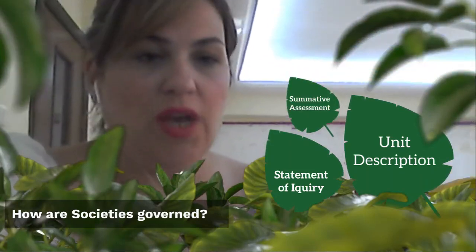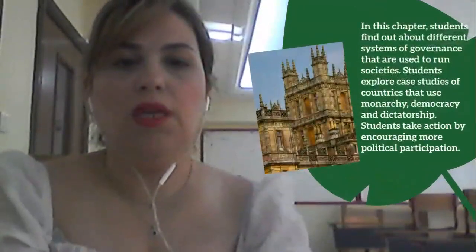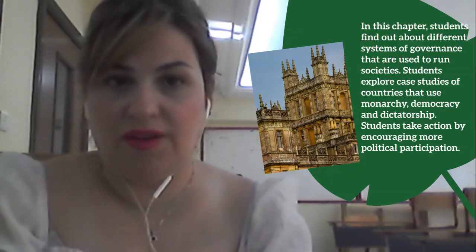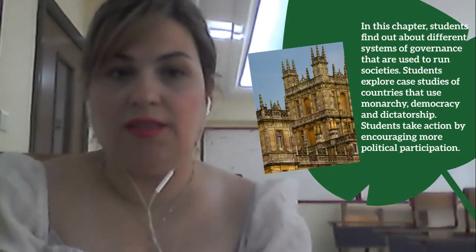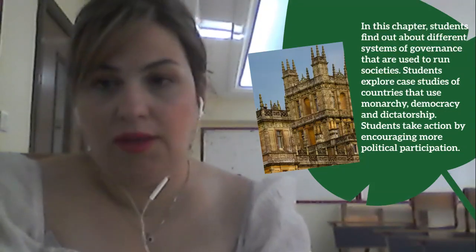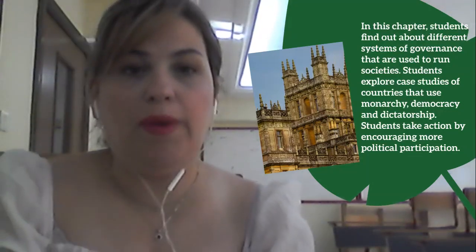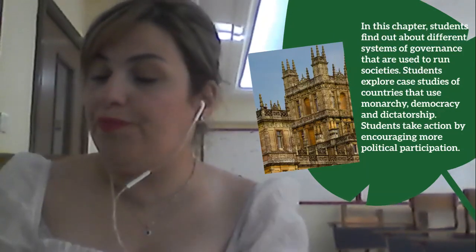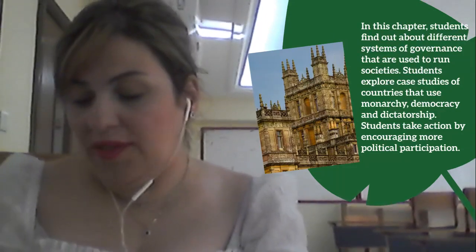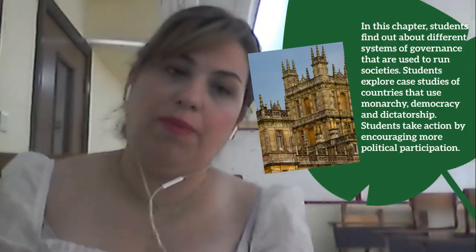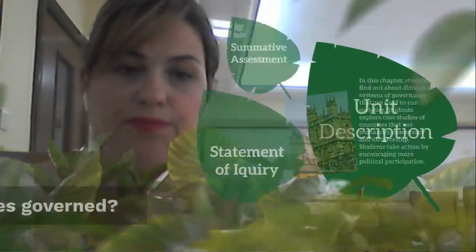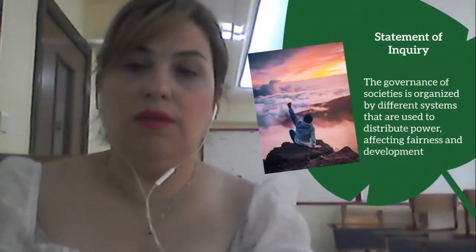In this chapter, we will find out about different systems of governance that are used to run societies. We are going to discuss monarchy, democracy, and dictatorship. We're going to explore case studies of countries that use monarchy, democracy, and dictatorship, and we're going to take action by encouraging more political participation within societies.